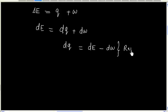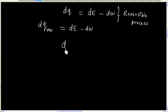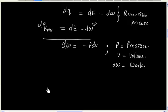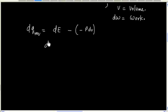Let us say the process is reversible. We can plug the value of dW into this expression. So we will have dQ reversible equals dE plus P dV.